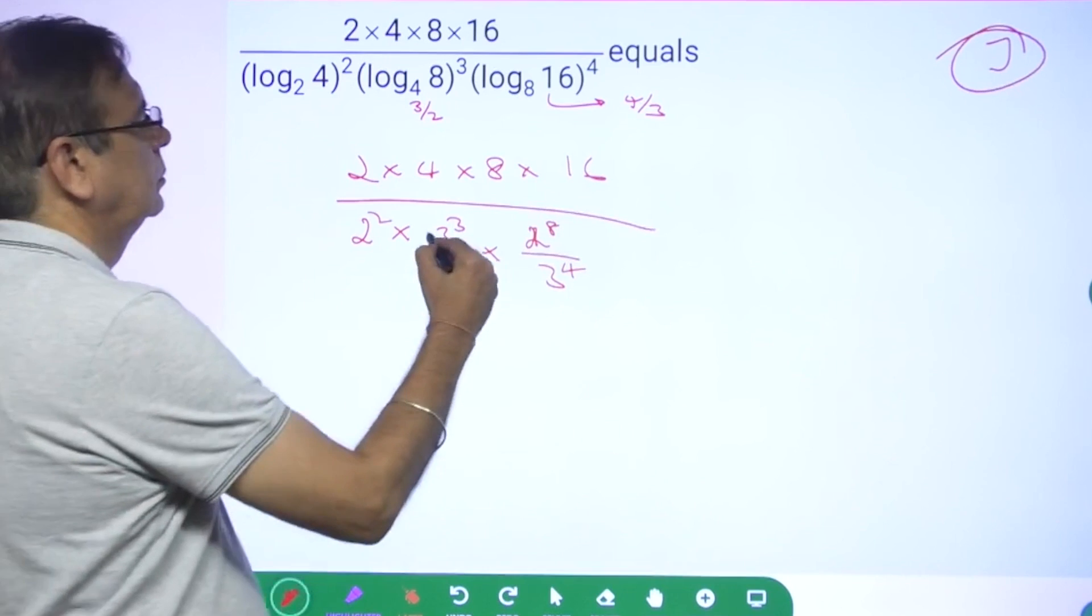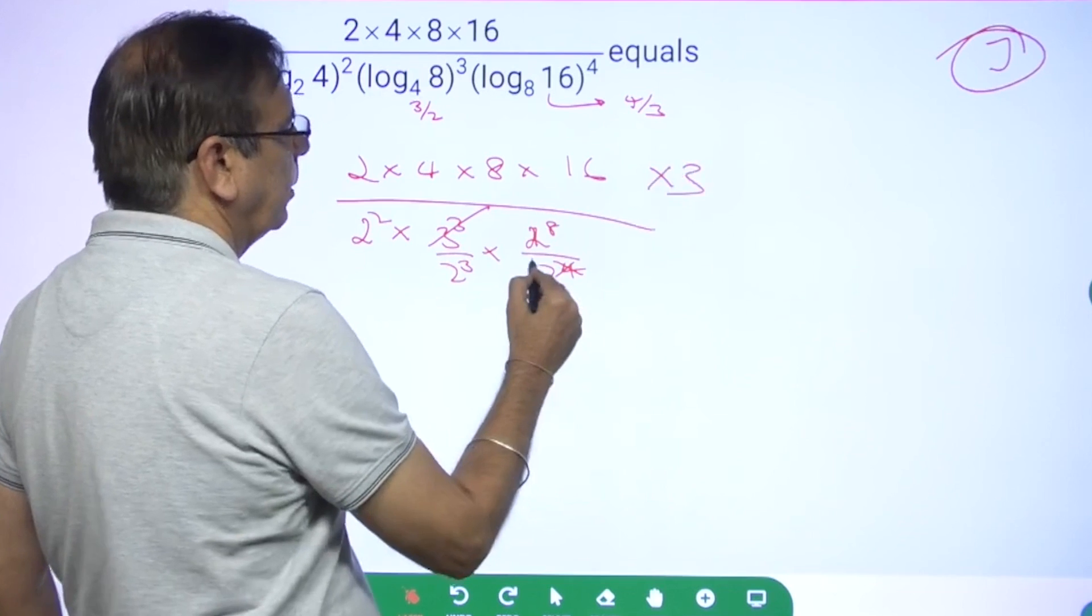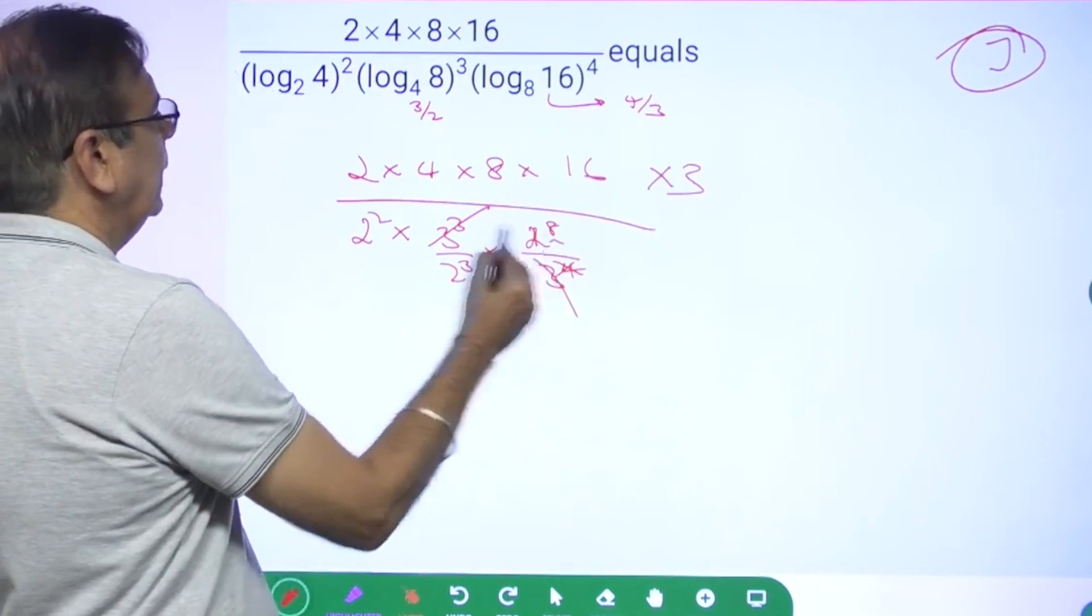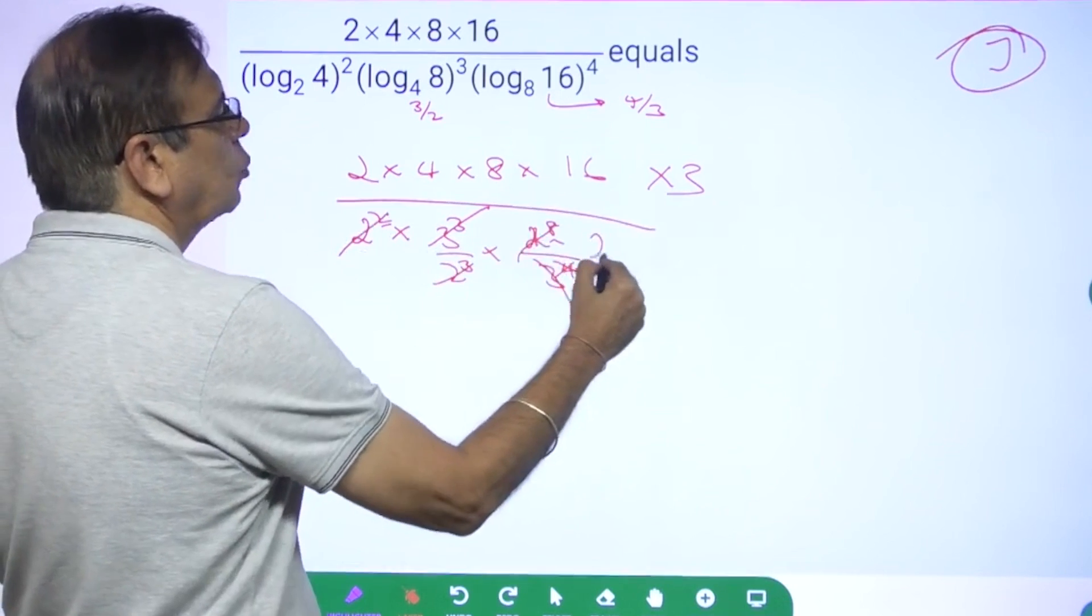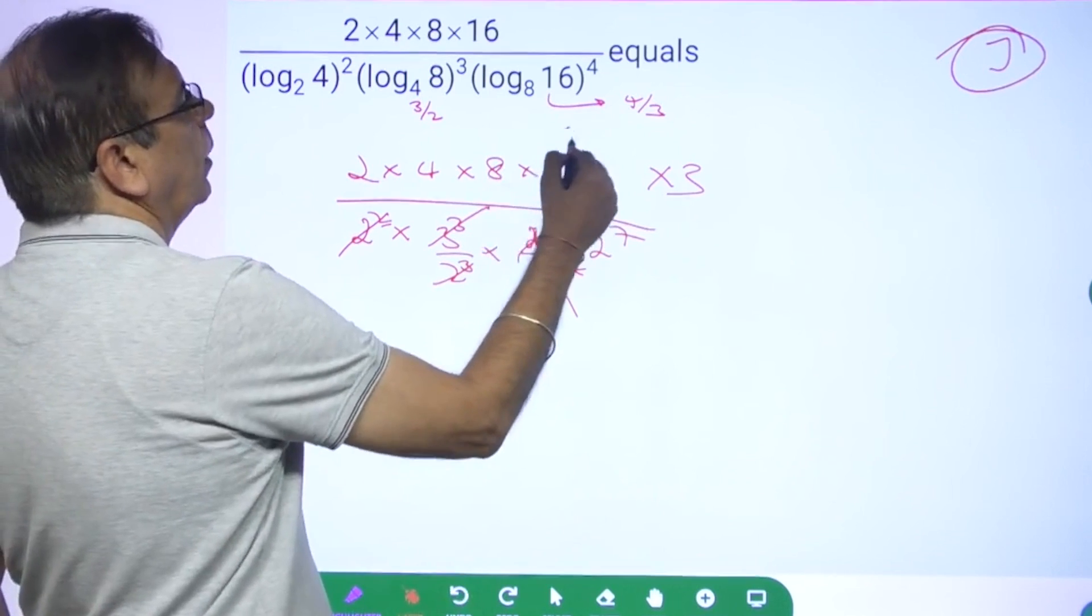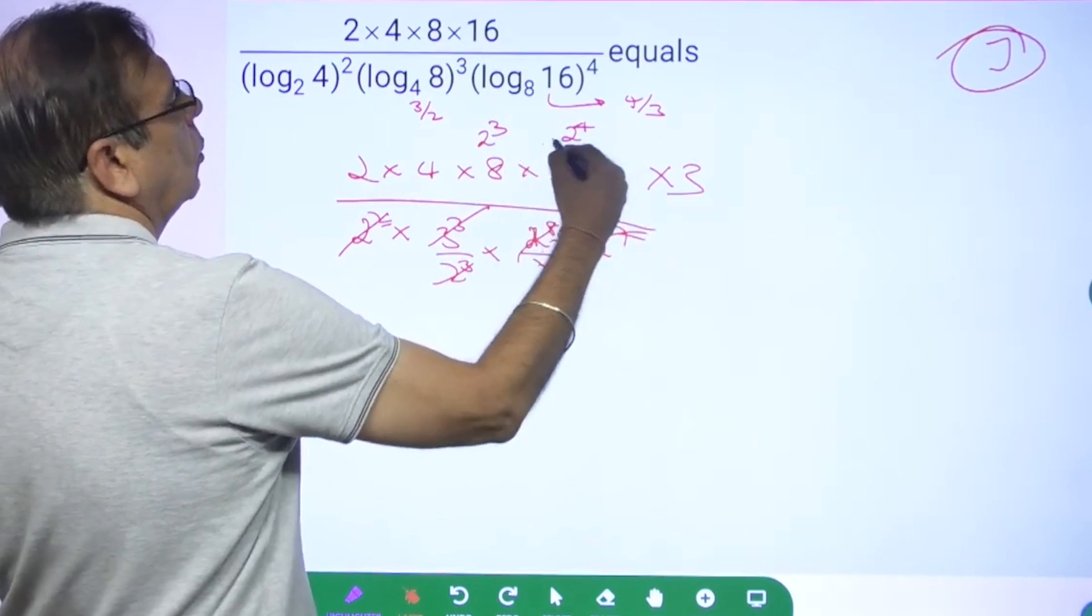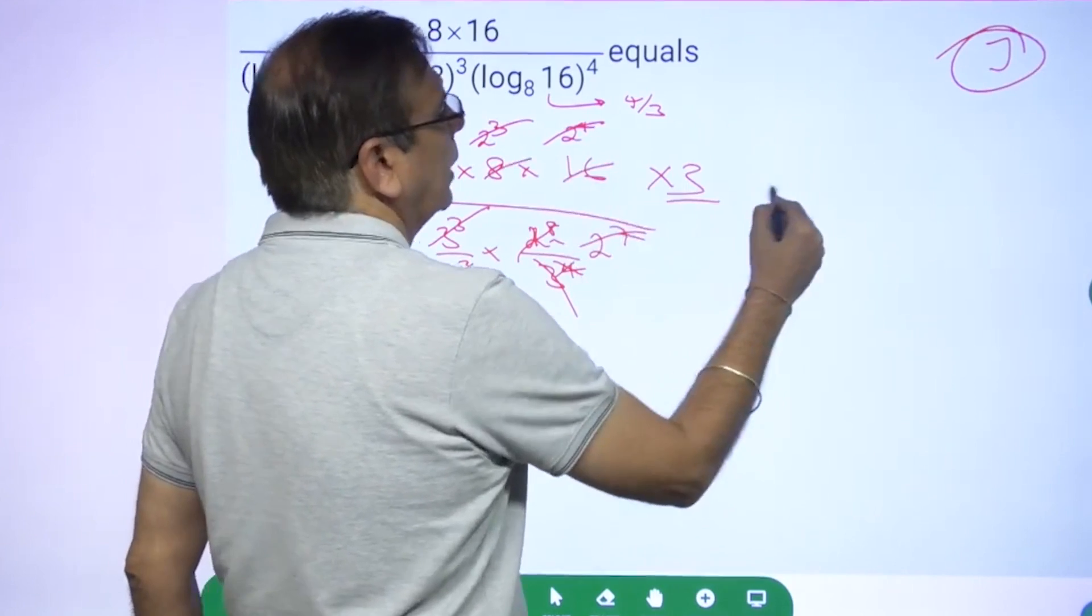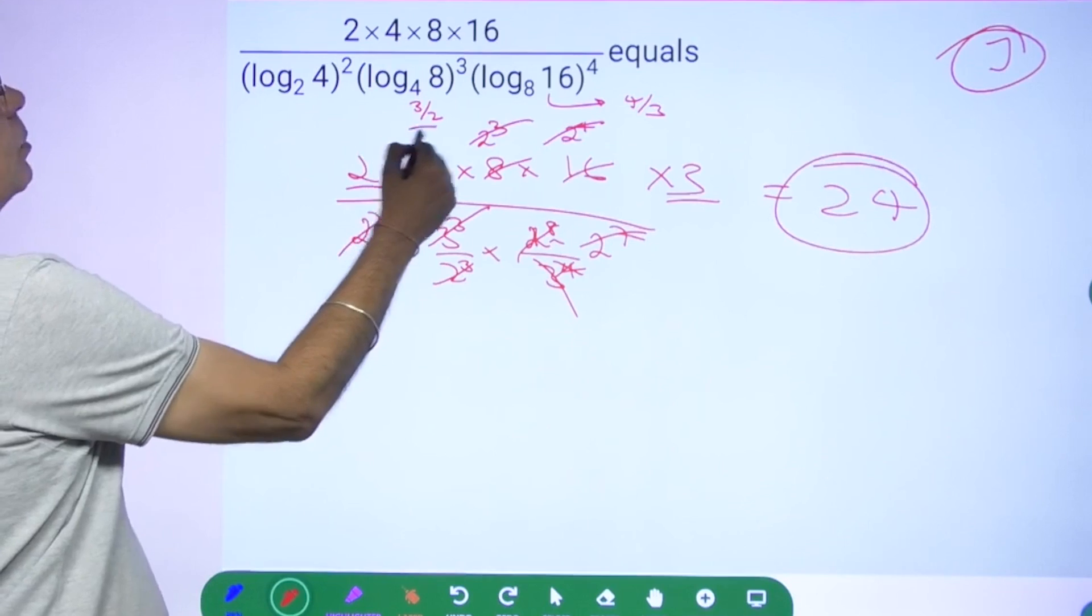This goes away, this goes away, so this 3 will go in the numerator. So let me remove this also, and 8 to 10, 10 minus 3 is 7. So what you have left with is 2 to power 7. This is 2 to power 4, this is 2 cube, so 2 to power 7, 4, 7. What I left with? 2 into 4 is 8, 8 into 3 is 24. 24 to 3 is the answer.